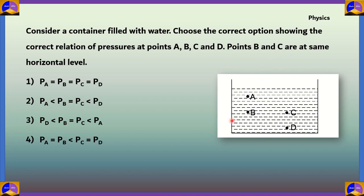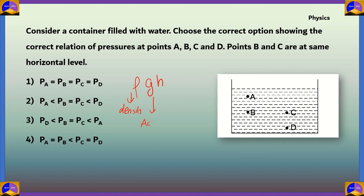We have a container filled with water and four points A, B, C, and D. We have to calculate each of their pressures and find which is greater, which is less, and which are equal. The formula for finding pressure is rho × G × H, where rho represents the density of the liquid — in this case water — G represents acceleration due to gravity, and H represents the depth.